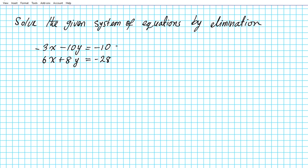A system of equations is basically a collection of two or more equations that have related unknowns. In this particular case we have two equations and the related unknowns are the x's and the y's. Elimination basically involves reducing the system into one equation where you have exactly one unknown in order to be able to solve it.